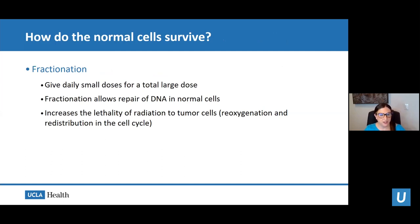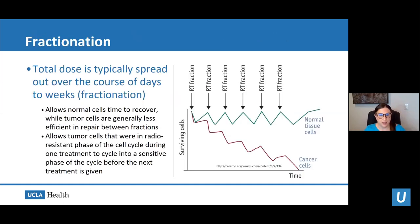Normal cells survive through fractionation — we give daily small doses of radiation for a total large dose. This allows repair of DNA in normal cells, while increasing lethality to tumor cells by allowing them to reoxygenate and redistribute in the cell cycle. On the right you can see a curve showing how normal tissue cells respond differently to radiation than cancer cells: after each fraction, normal cells repair themselves, while cancer cells cannot, and ultimately die off with enough radiation doses.